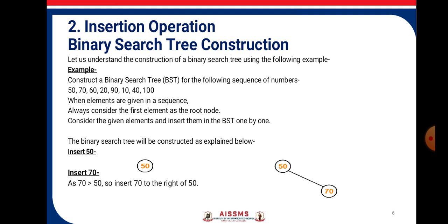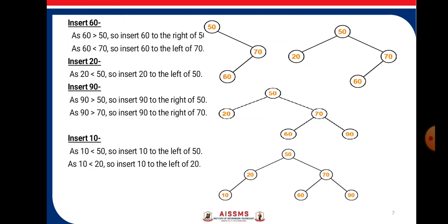Consider the given elements and insert them in the BST one by one. Firstly, 50 is inserted. Then insert 70 — as 70 is greater than 50, it will be inserted to the right of 50. Insert 60 — 60 is greater than 50, so insert 60 to the right of 50; as 70 is greater than 60, insert 60 to the left of 70. Now to insert 20 — 50 is greater than 20, so insert 20 to the left of 50.